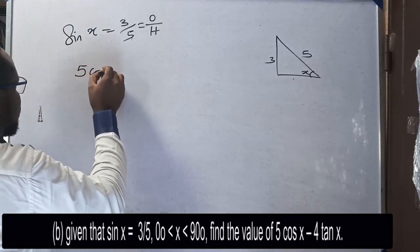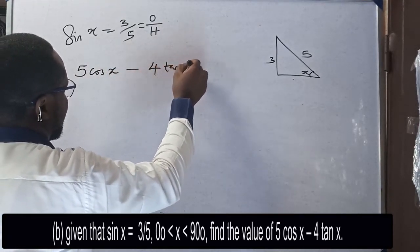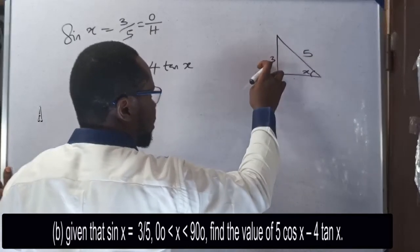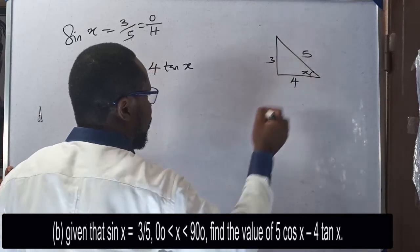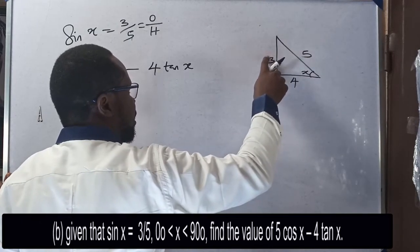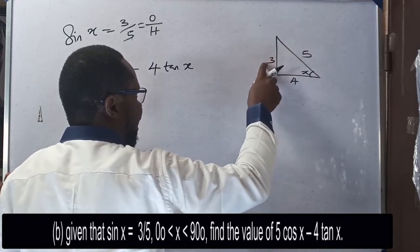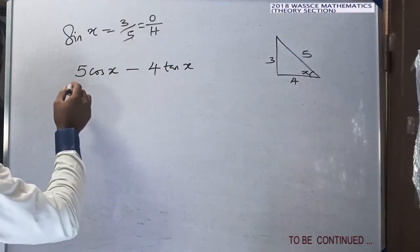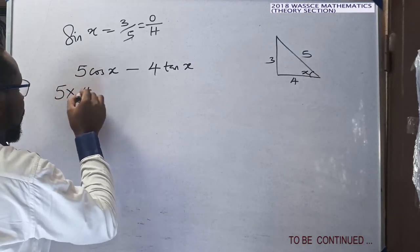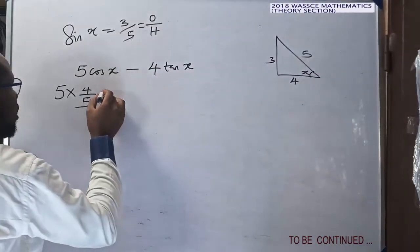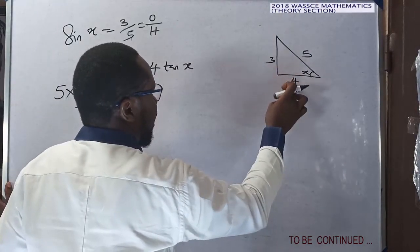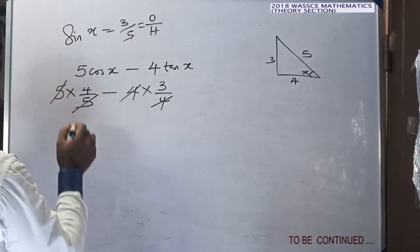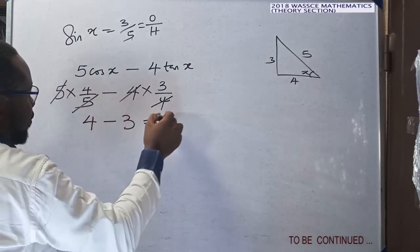Using Pythagoras: 5 squared minus 3 squared equals 25 minus 9 equals 16, and the square root of 16 is 4. So the adjacent side is 4. Therefore cos x equals adjacent over hypotenuse equals 4 over 5, and tan x equals opposite over adjacent equals 3 over 4. So 5 times (4/5) minus 4 times (3/4) simplifies to 4 minus 3, giving a final answer of 1.